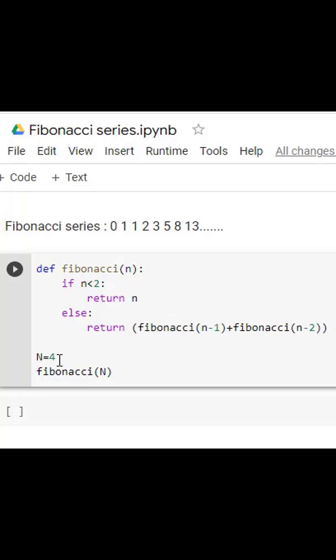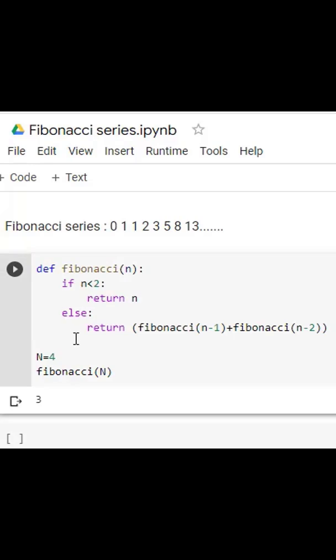Now let's check for n equals 4. When I run this code, I will get the value as 3. So this is 0th index, 1st index, 2nd index, 3rd index, 4th index. So we got the output as 3.